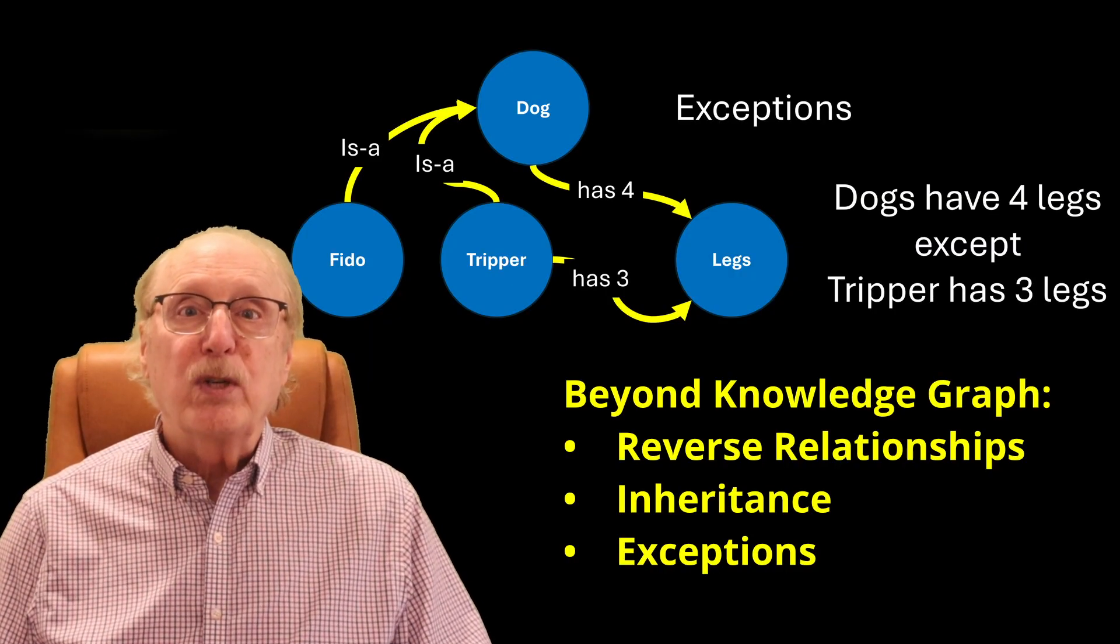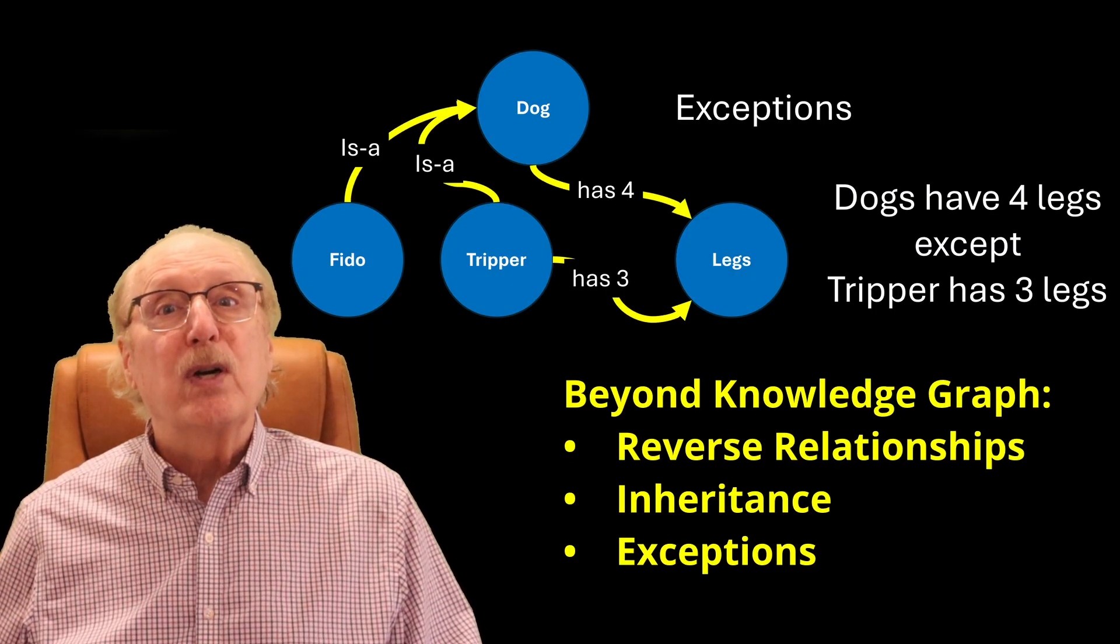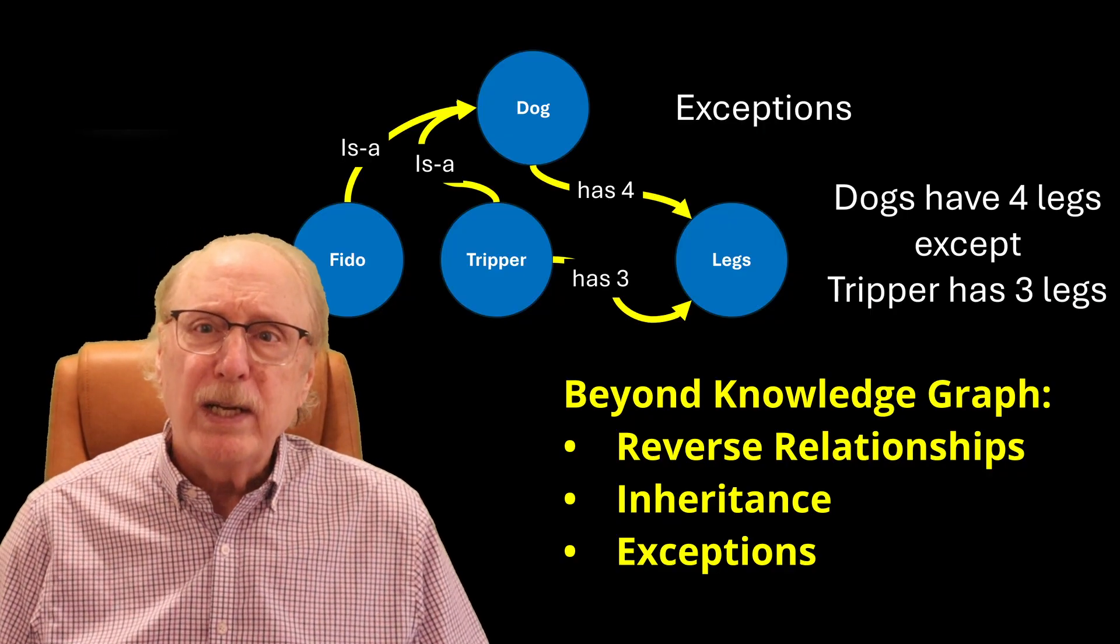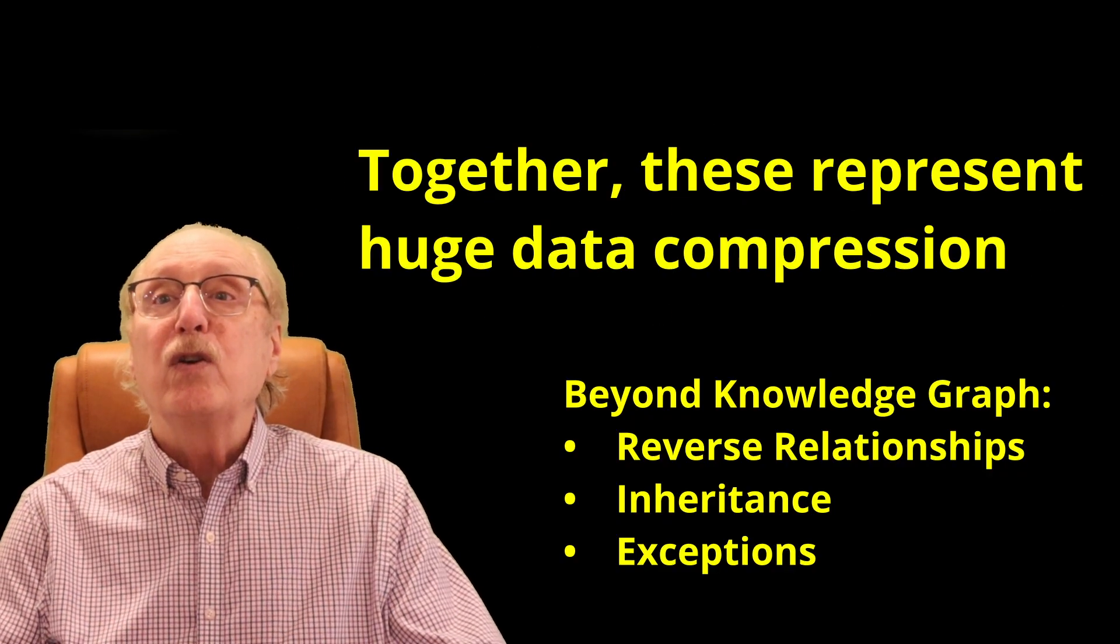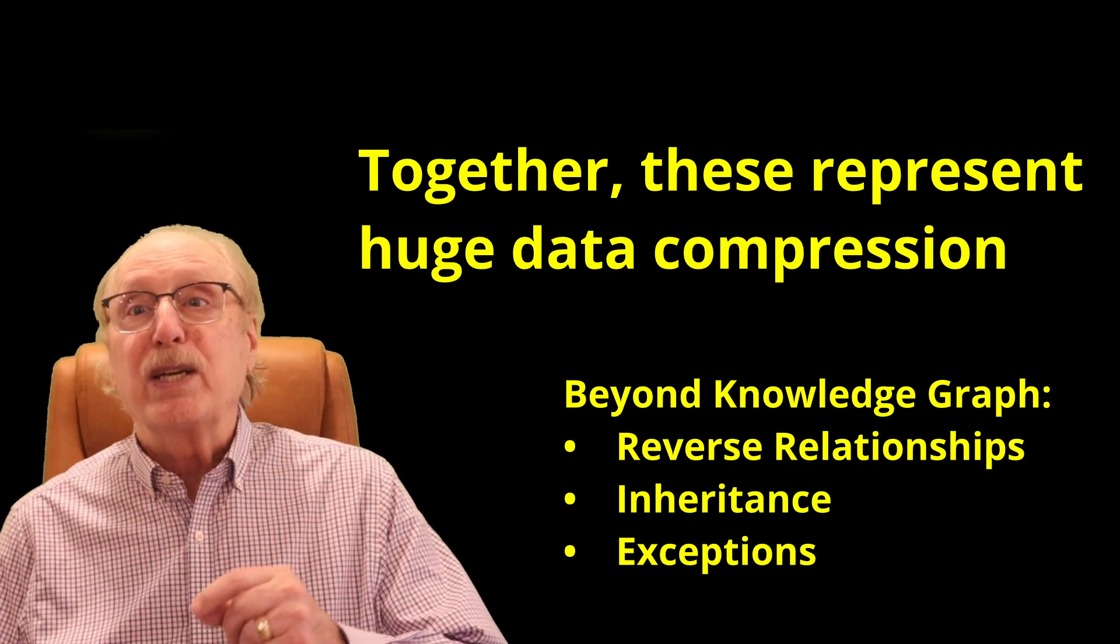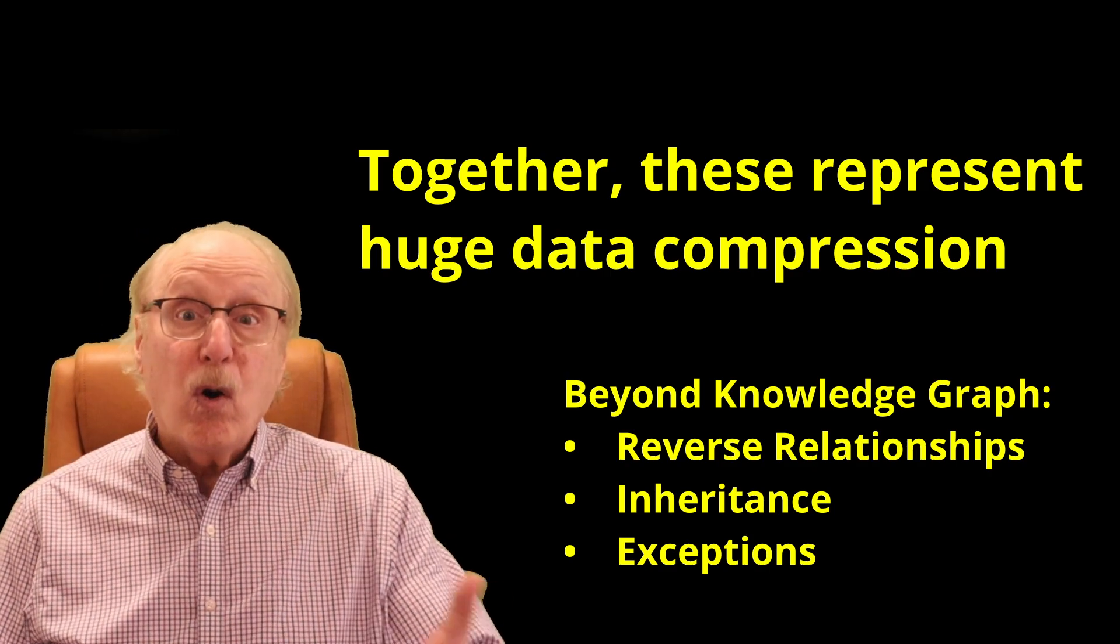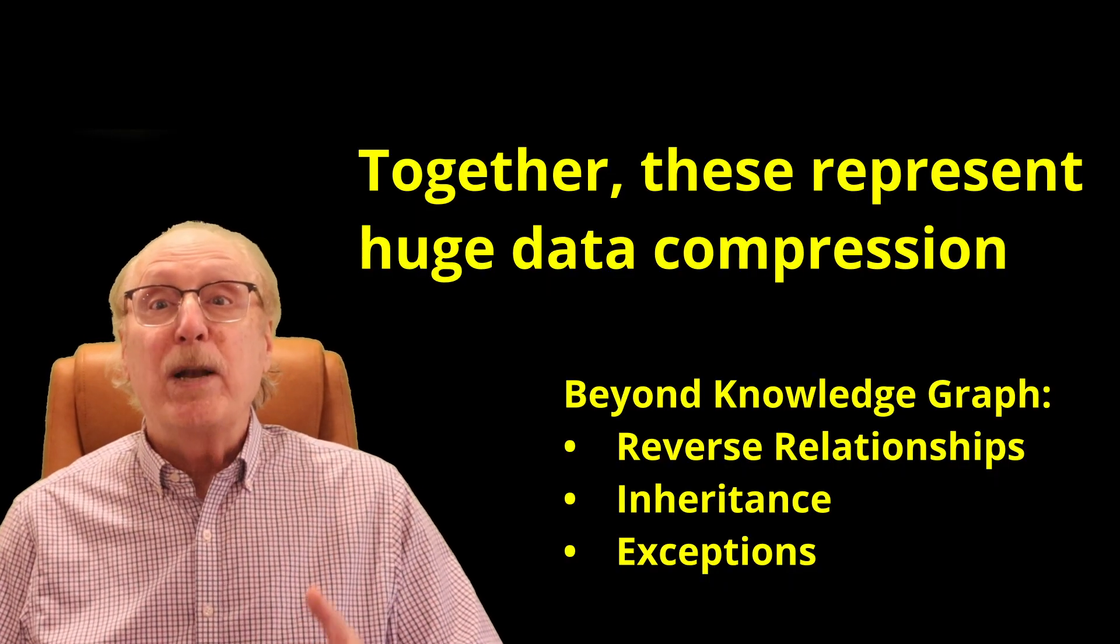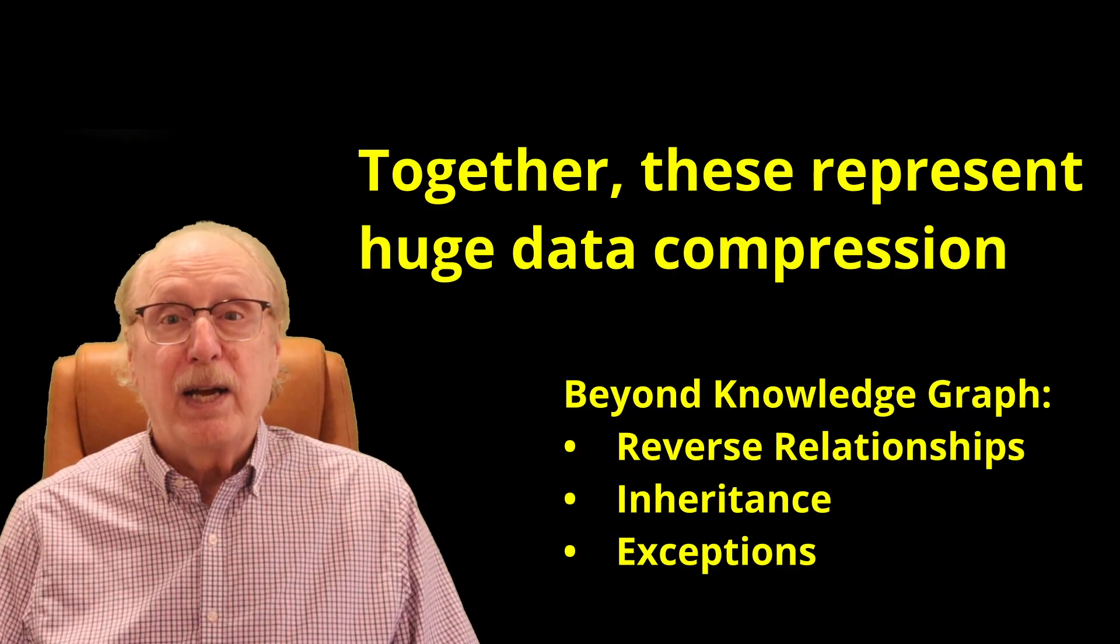Further, the graph supports exceptions, so it can easily represent that Tripper is a dog, but Tripper only has three legs. Taken together, these features represent a huge mechanism for data compression because the only information you need to know about FIDO or Tripper, or anything else, is what makes that thing unique. All other knowledge can be inherited on the fly.